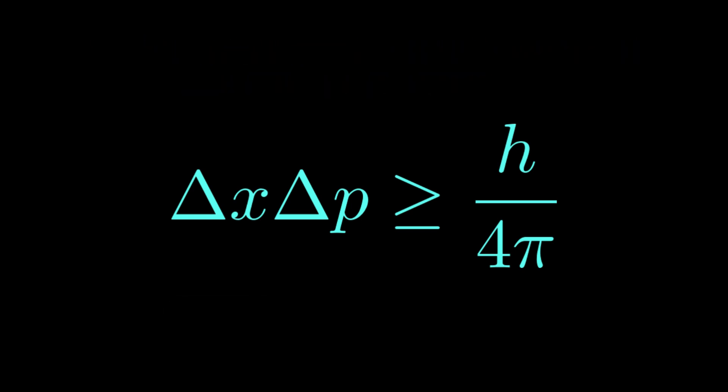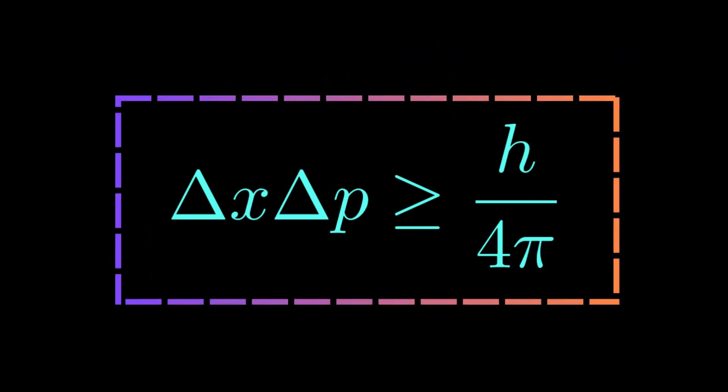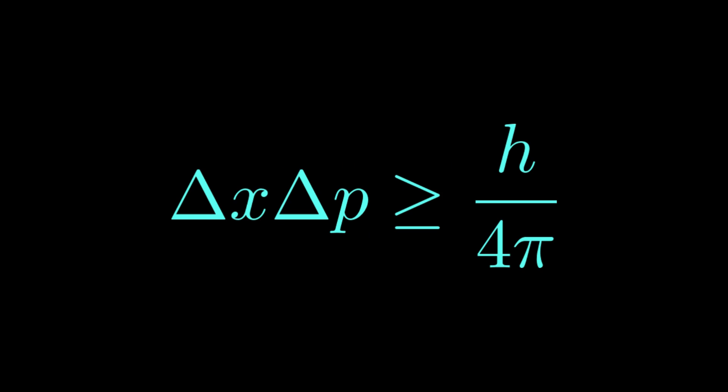I want to focus on the Heisenberg relation in this form. The delta means the extent of the error. The greater the uncertainty in position, the lower the uncertainty in momentum or speed, and vice versa.